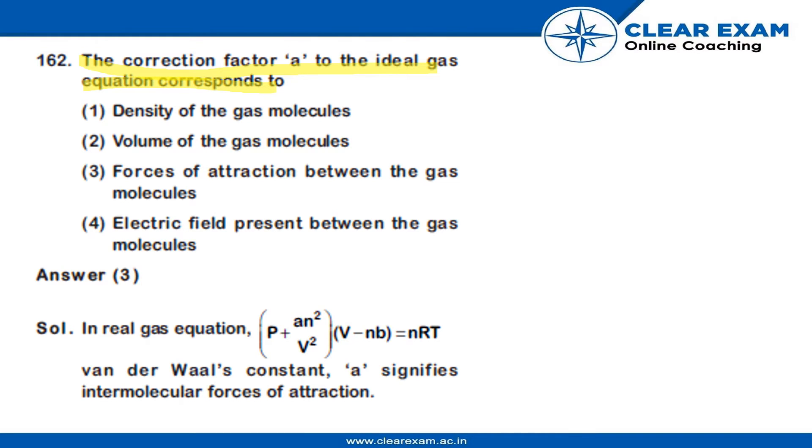So the solution to this is, in real gas equation, we are given P plus AN squared upon V squared into V minus NB is equals to NRT.